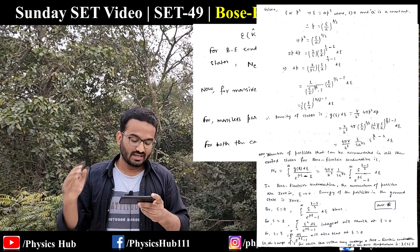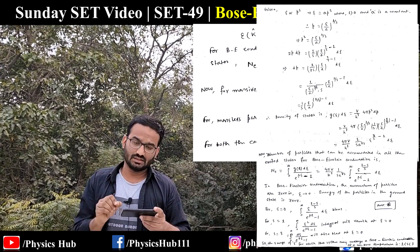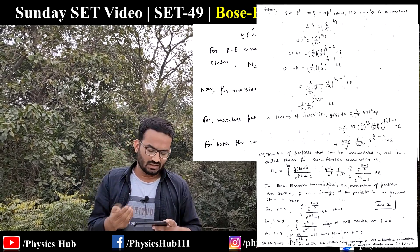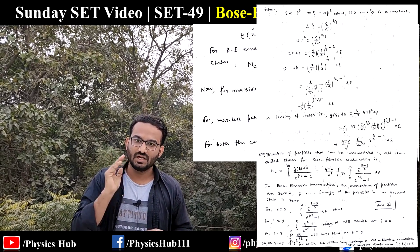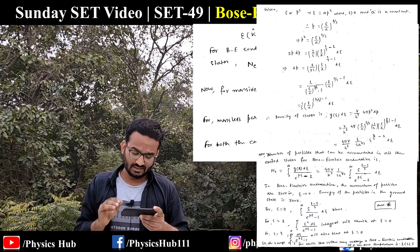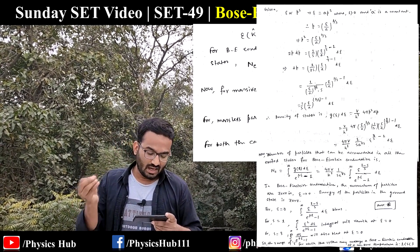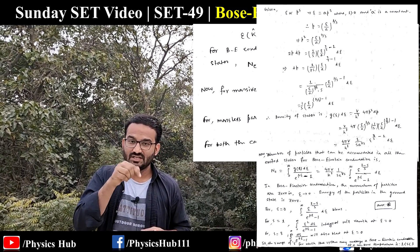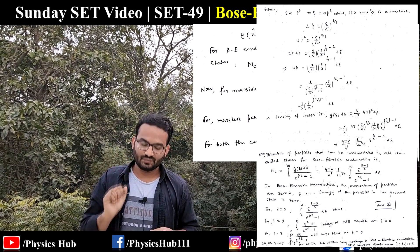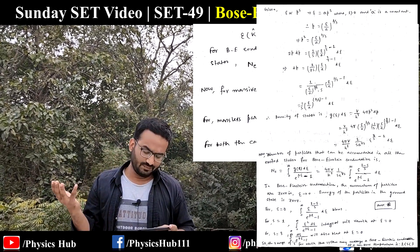The number of particles accommodated in all excited states for Bose-Einstein condensation is N(E) = ∫₀^∞ g(E) dE / [e^(βE) − 1], which equals 4π·(V/h³)·(1/s)·a^(−3/s) times some integral. In Bose-Einstein condensation, the momentum of ground-state particles is approximately zero, meaning the ground state energy ε ≈ 0, so all ground-state particles have zero energy.